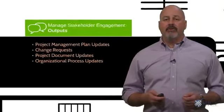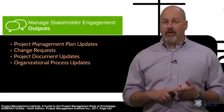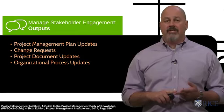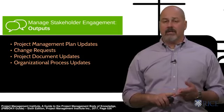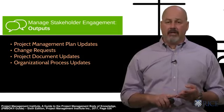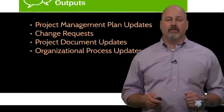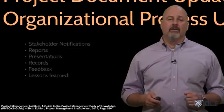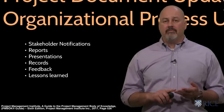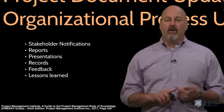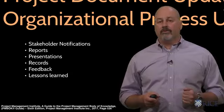The outputs of your managed stakeholder engagement process should be updates to your overall project management plan, any change requests made by your stakeholders during this process, updates to any other documents, and anything required internally to the organization. This can include reports, presentations, updating progress, feedback, or lessons learned — anything that can be recorded for current or future use.